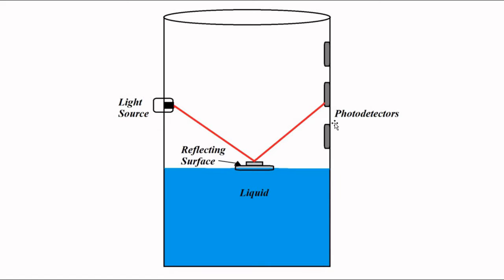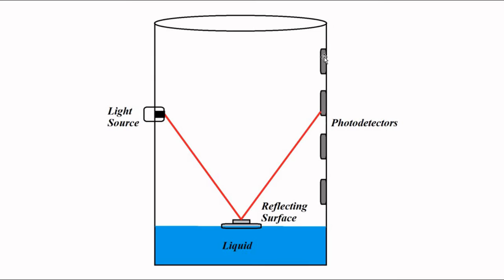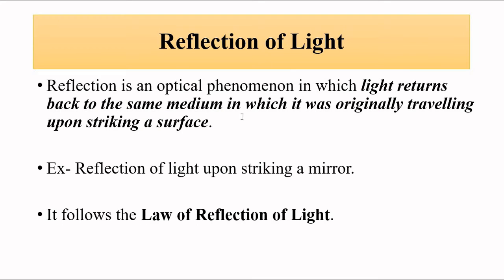The light undergoes reflection and falls on one of an array or series of photo detectors connected at the other end of the container. Depending on the liquid level, the position of the reflecting surface also changes. As a result, depending on the angle of incidence and the angle of reflection, the reflected light falls on one of the photo detectors in the series. By knowing which photo detector the light is reaching, we can determine the liquid level.